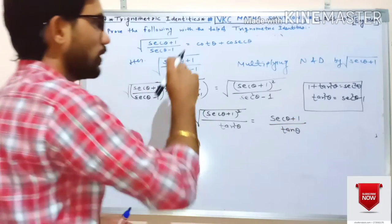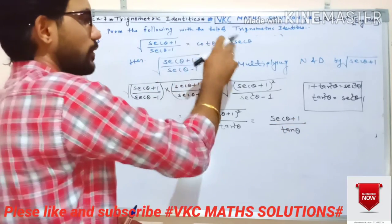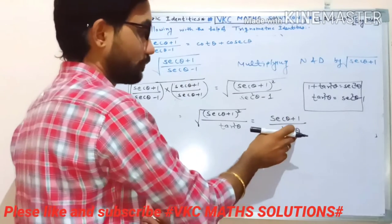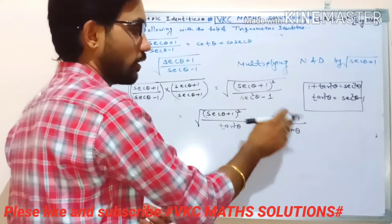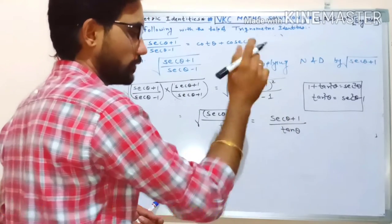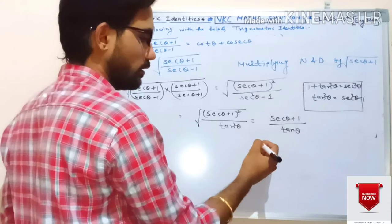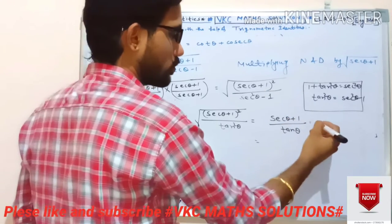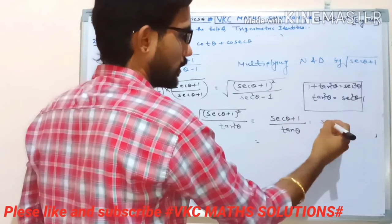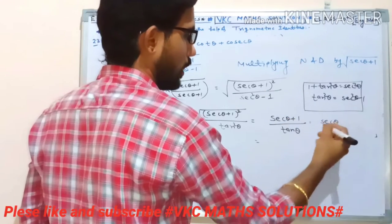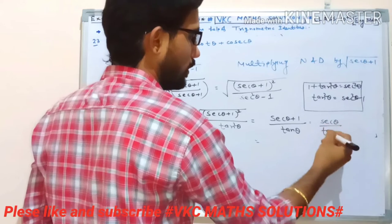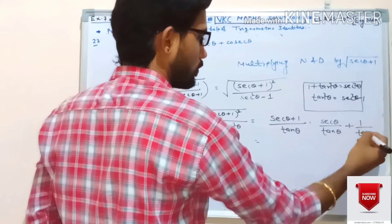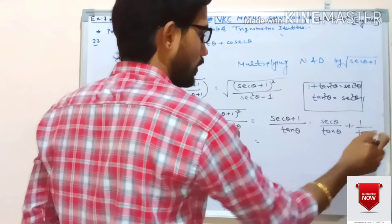Now we need to reach the answer cotθ + secθ. So we distribute tanθ in the denominator across both terms, since it is of the form (a + b)/c. This gives us: secθ/tanθ + 1/tanθ.